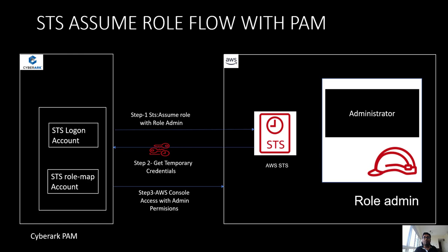In this entire workflow, the first step is the request gets forwarded to AWS STS — we are saying we want to assume a role admin. From the AWS side in step two, the temporary credentials are sent back in step three. We then use those temporary credentials to connect to the AWS console. The good part within CyberArk is that the entire session — whatever the user is doing on the AWS console — is going to get recorded using the CyberArk jump host.